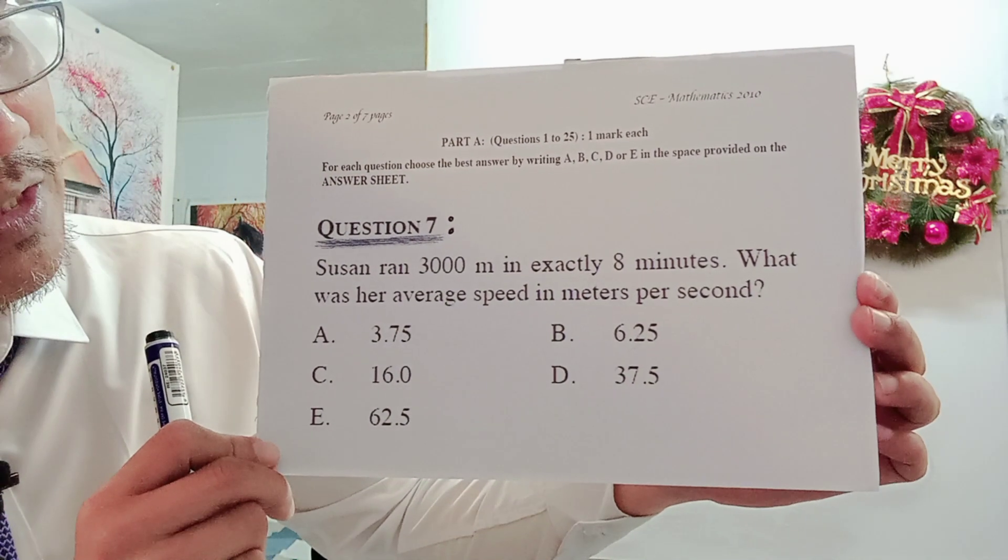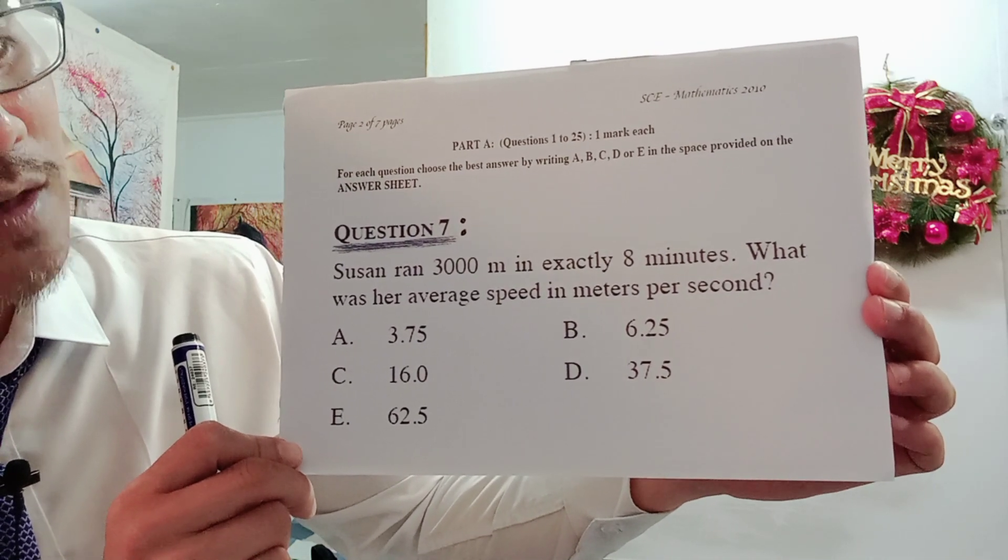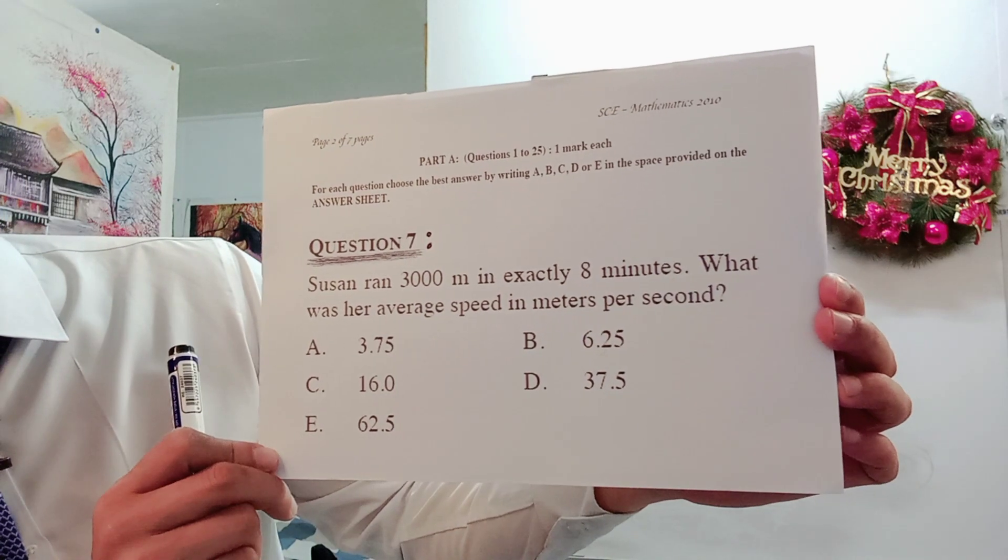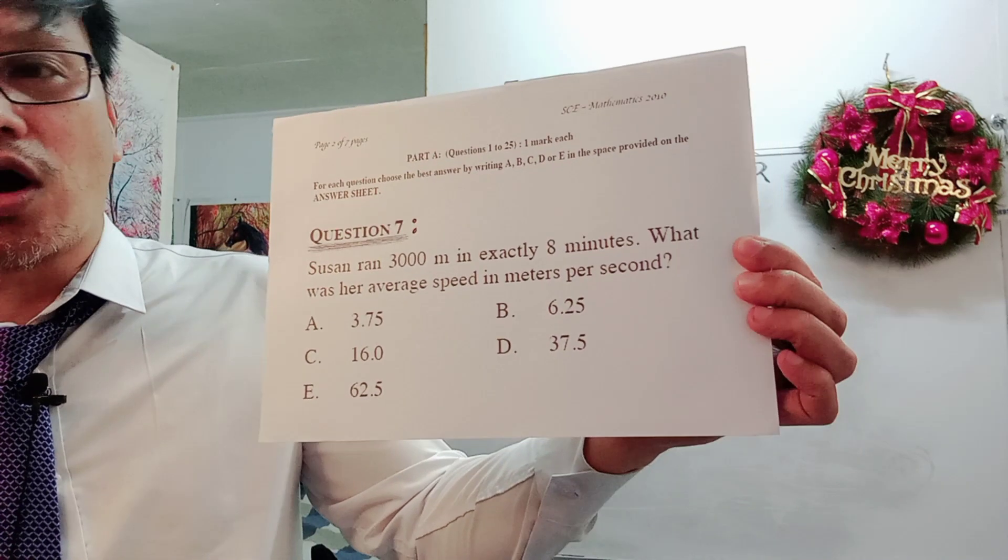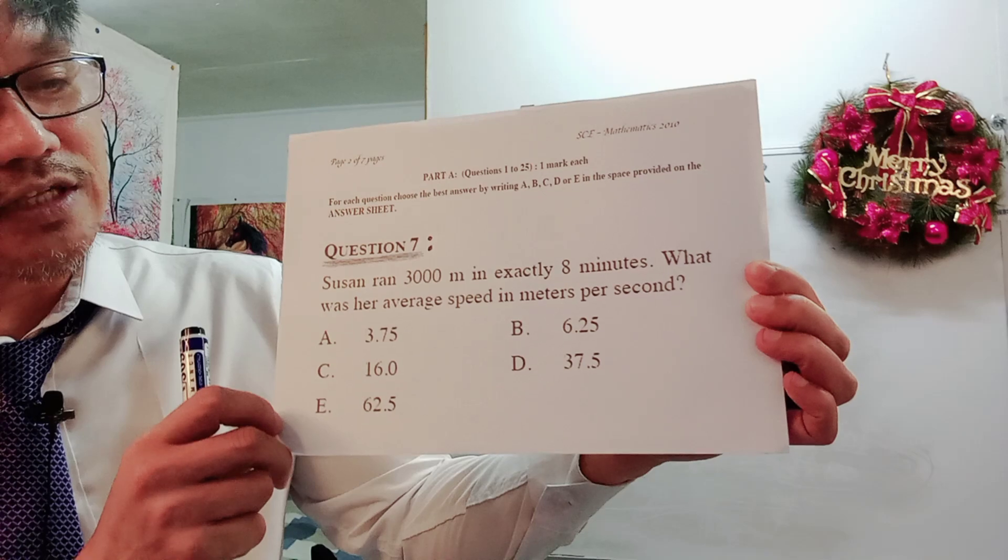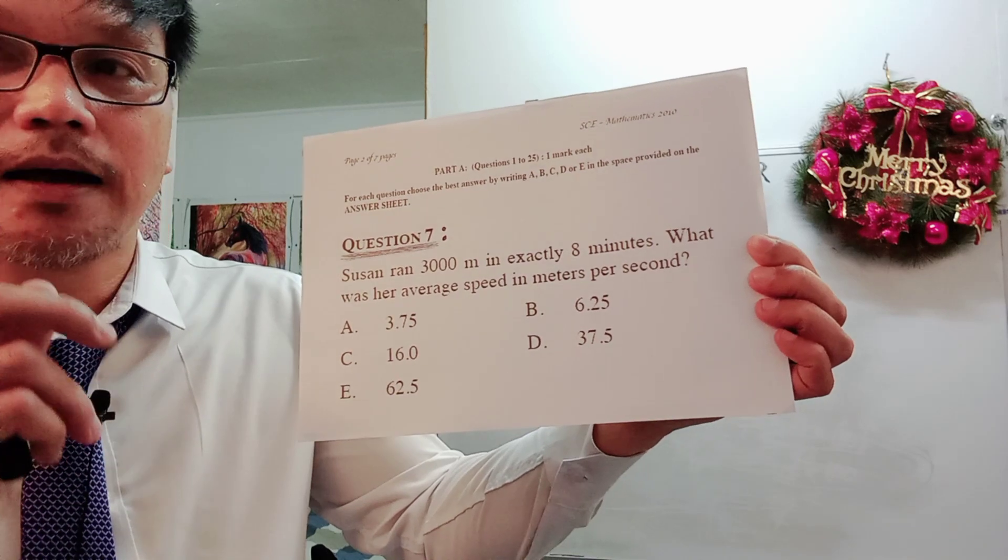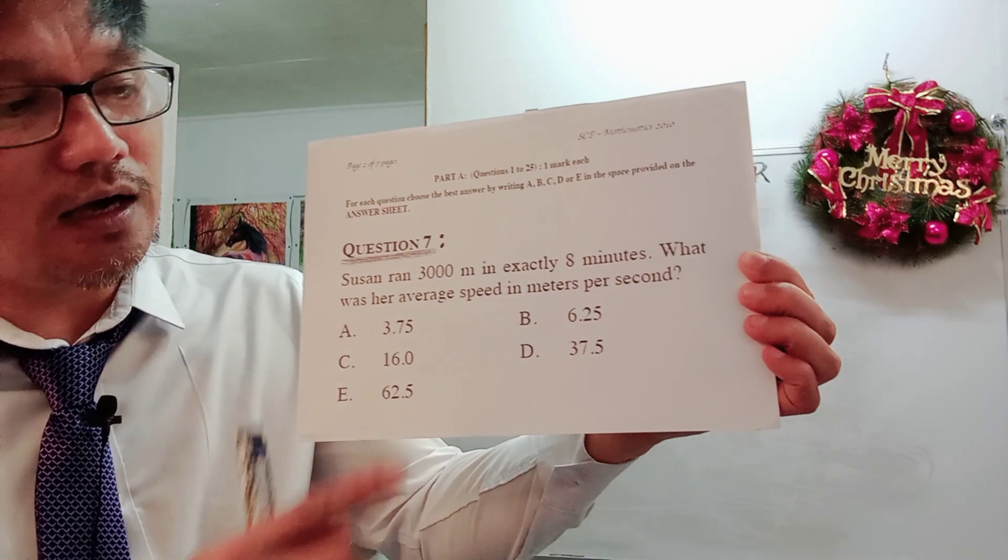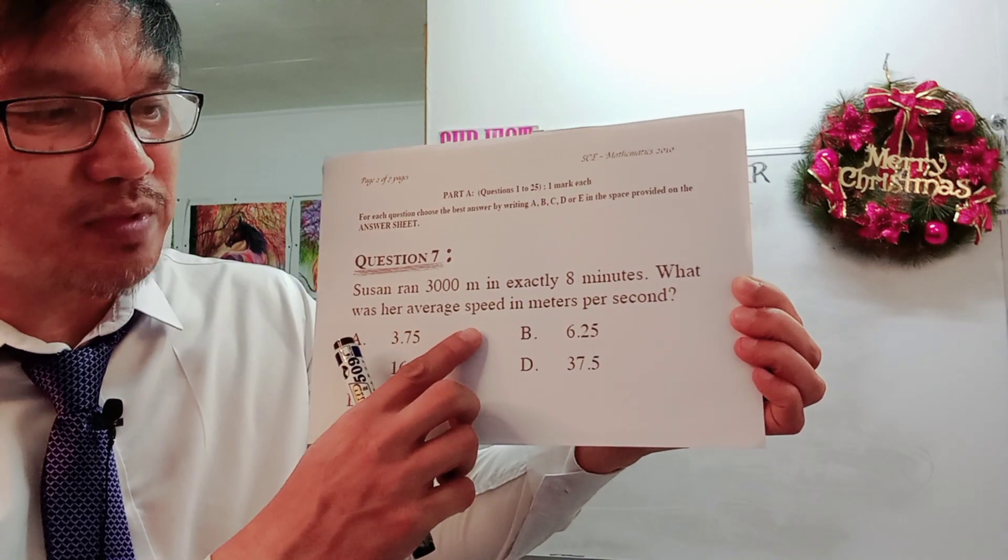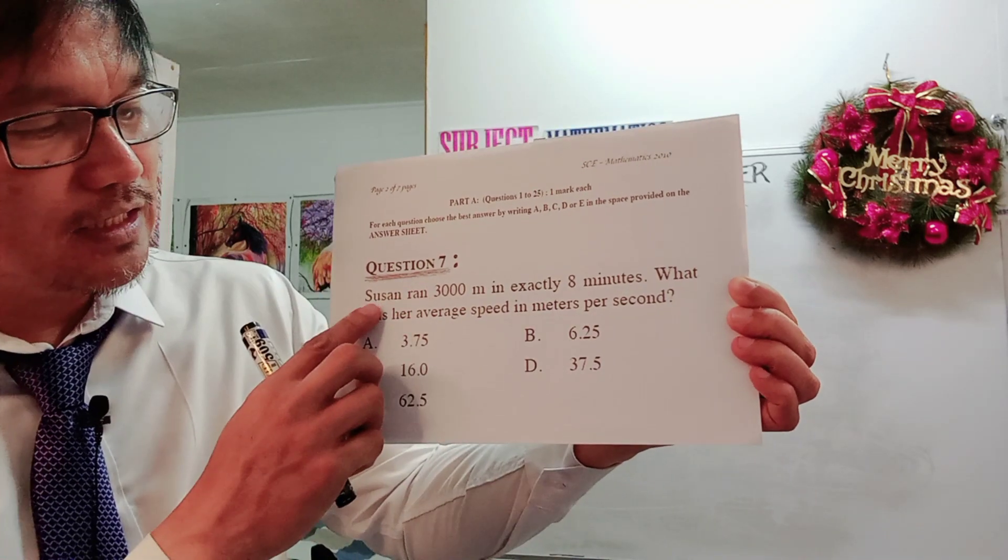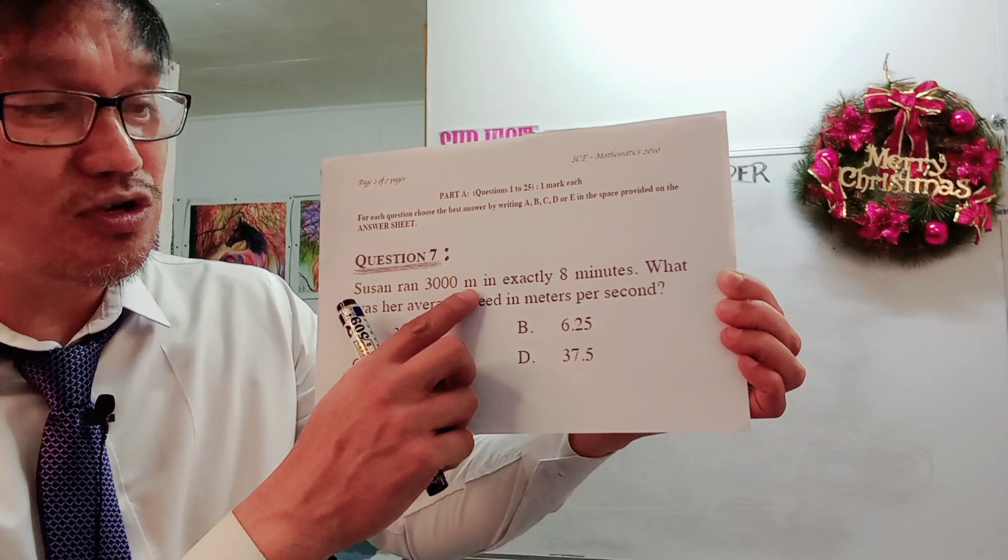The question says: Susan ran 3,000 meters in exactly 8 minutes. What was her average speed in meters per second? So this kind of question is more on the conversion of the unit. You have to check carefully, always be mindful about the question. You are asked to find the average speed in meters per second, given the distance that is 3,000 meters.